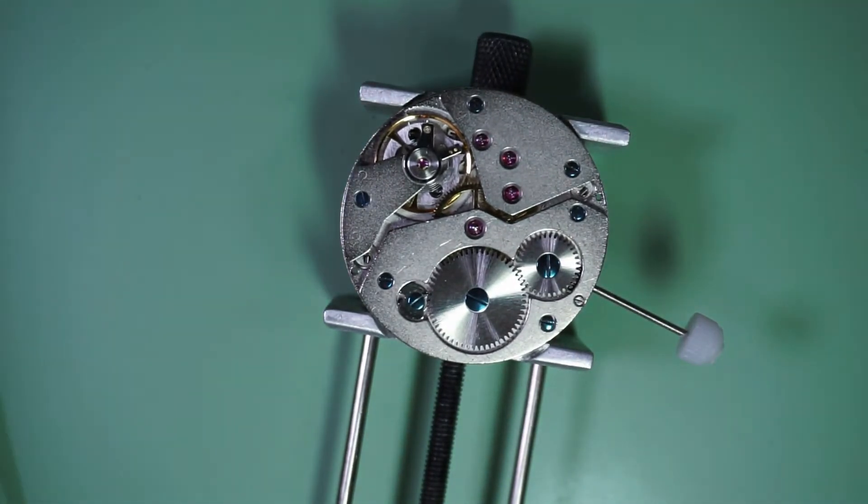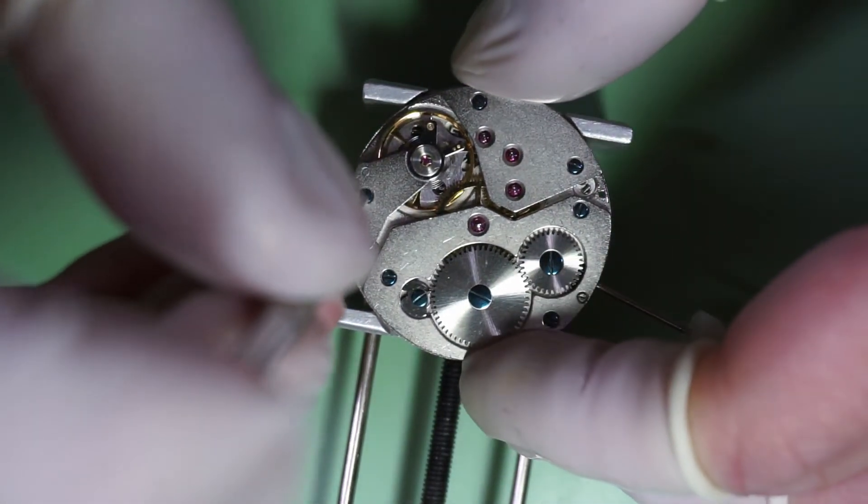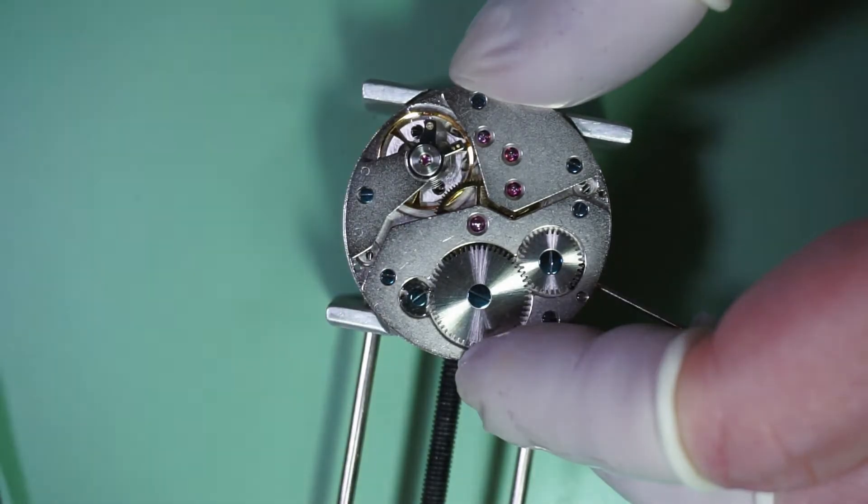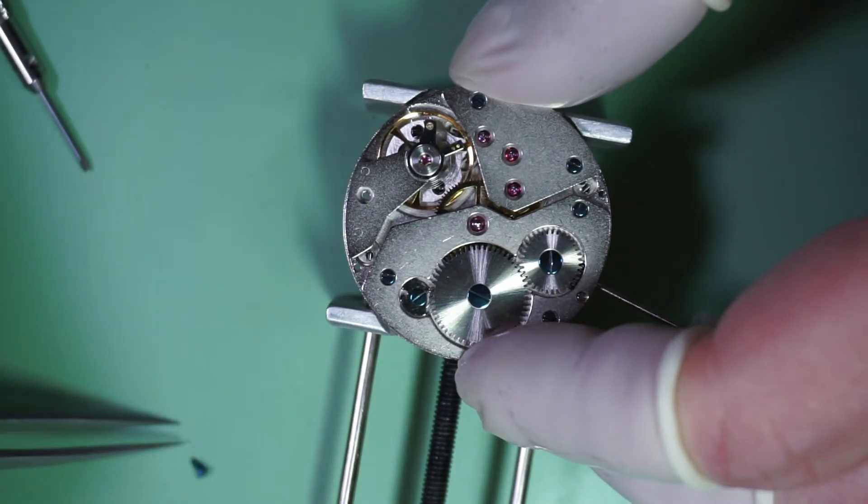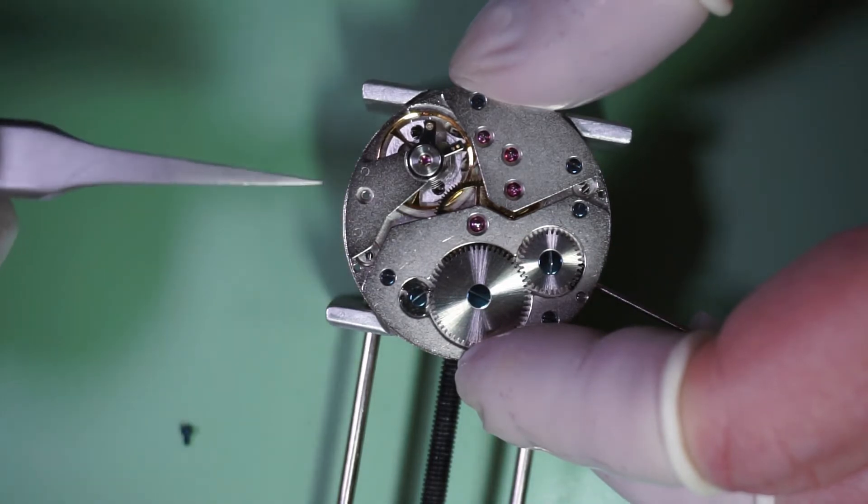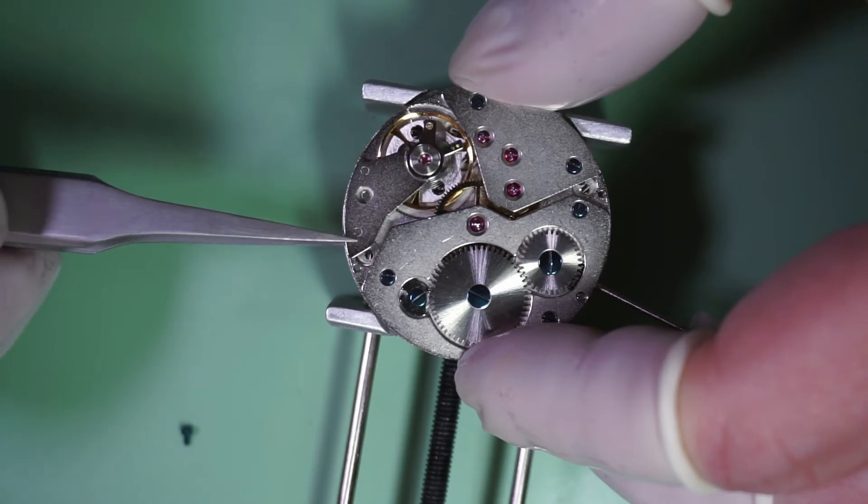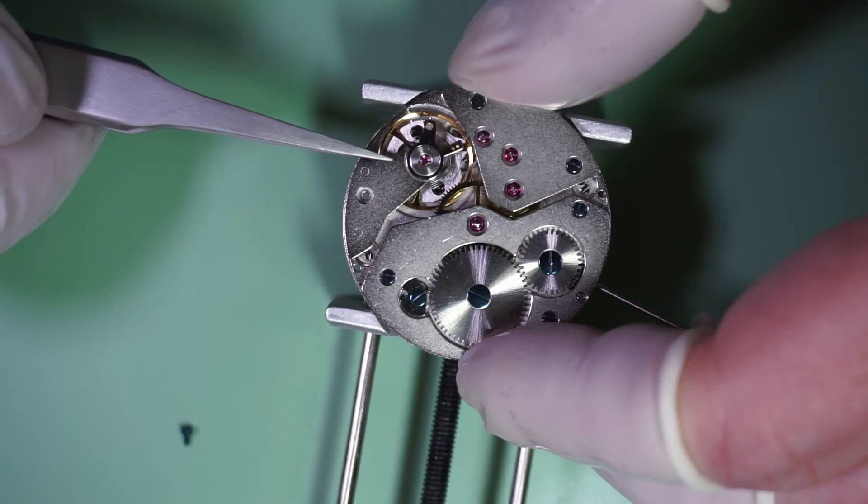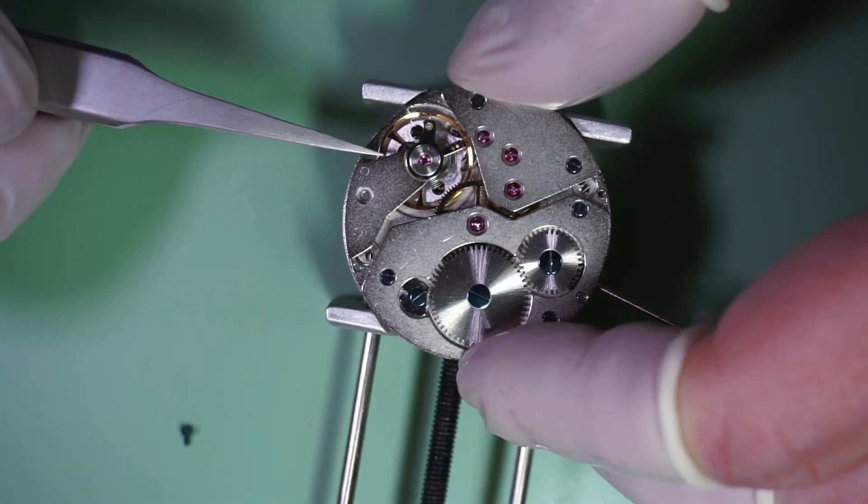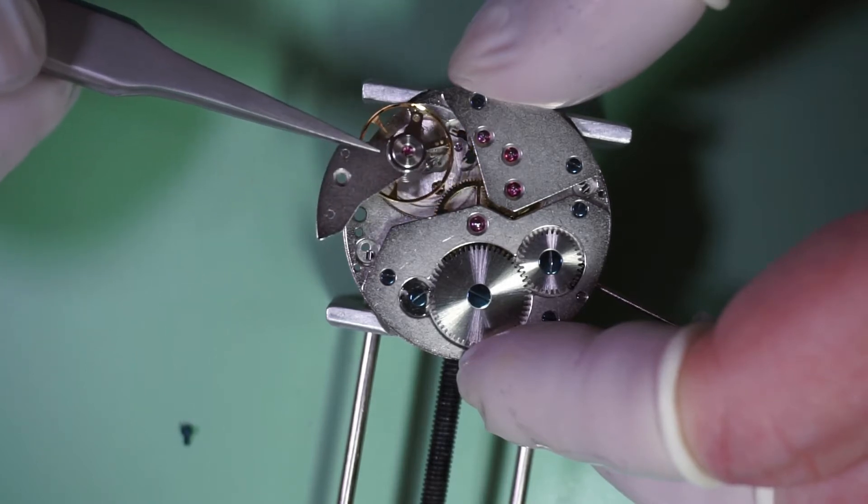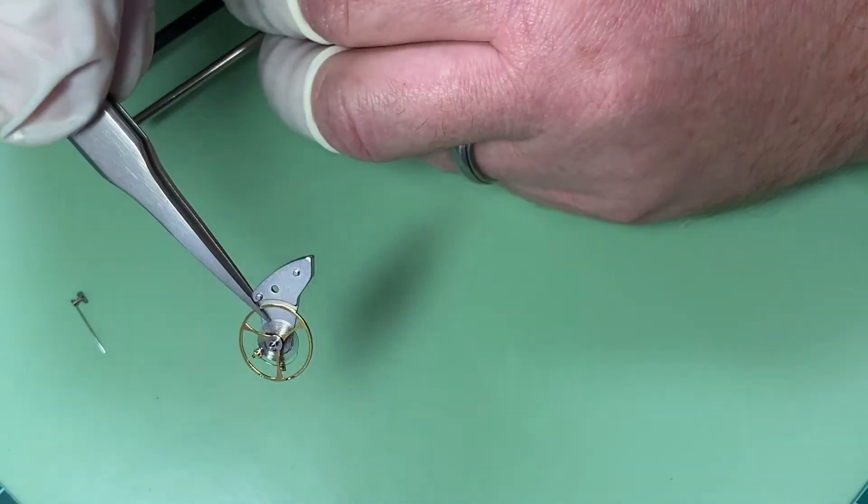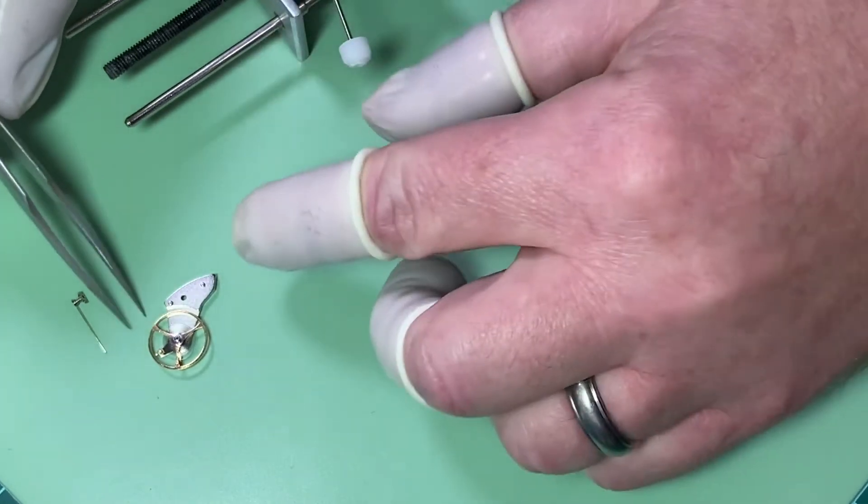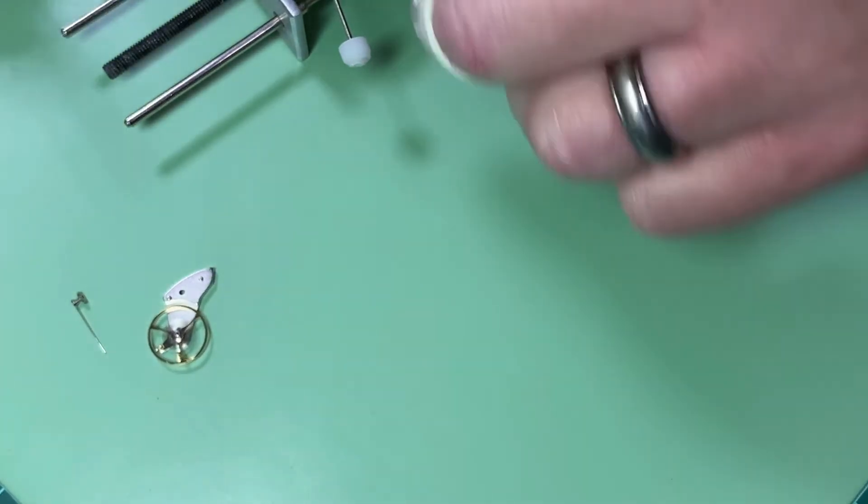So the very first thing we need to do is to remove the balance wheel and the balance wheel bridge. The balance wheel by far is the most delicate part of this watch or any watch. So it's great to get it out of the way first just to protect it. And you will see when I get it out that the little spring on the balance wheel, it's called the hair spring, it will just bounce all over the place. And that is the balance wheel and the balance bridge. There we go. Now you can see it moving back and forth.